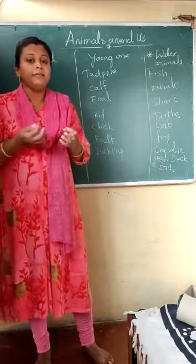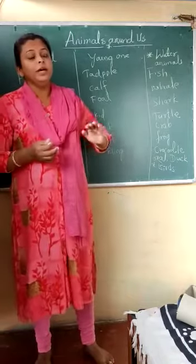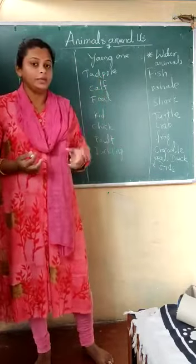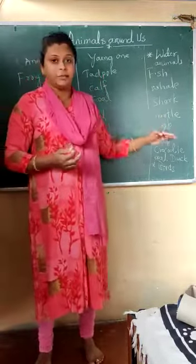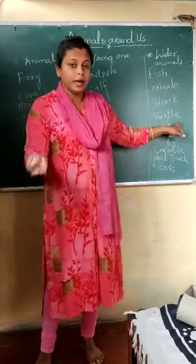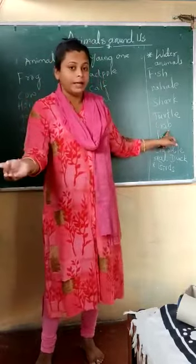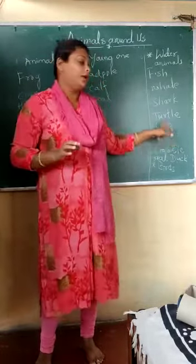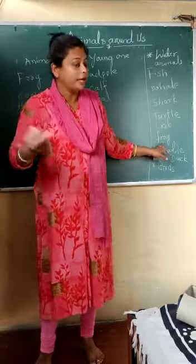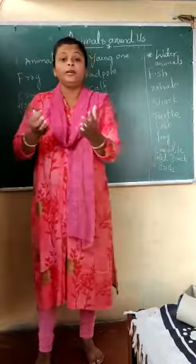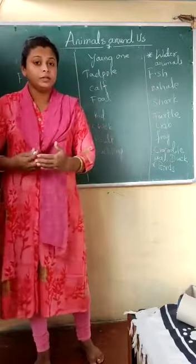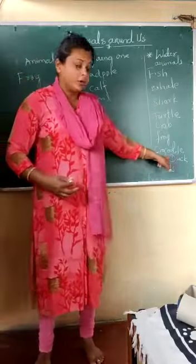Amphibians means these animals will live inside the water and also outside the water — on the land as well. They have the body adjustment to live and survive in both environments. For example, turtle we can see on the land and inside the water. Crab we can see on the land and inside the water. Frog we can see around our houses and also in the water. Crocodile, if you've been to a zoo, you can see it comes outside the water also.